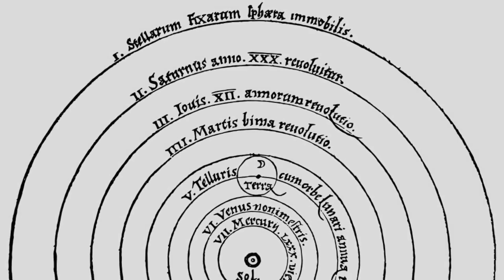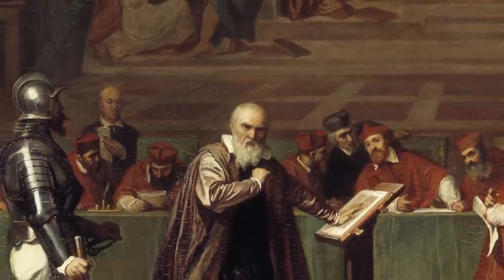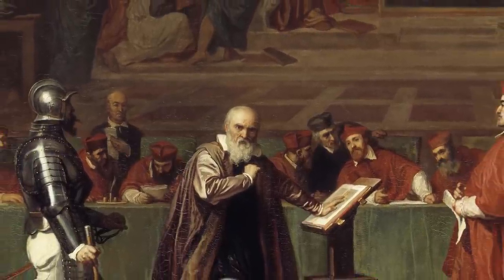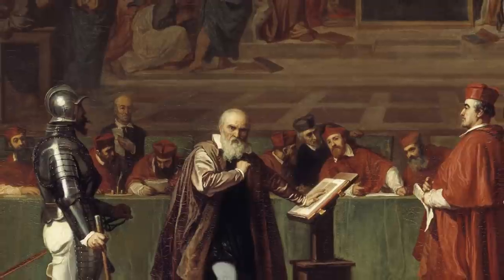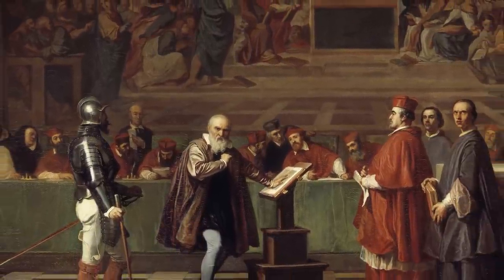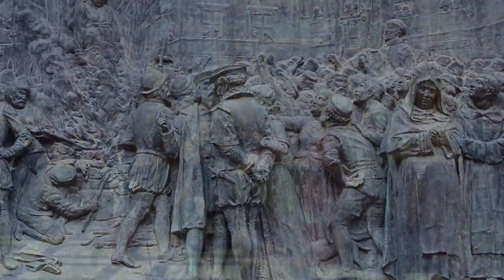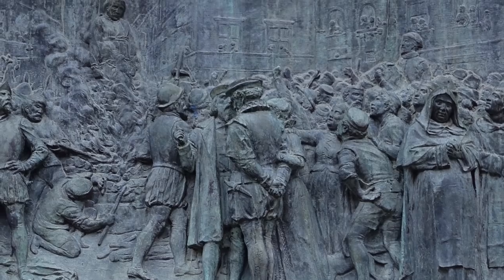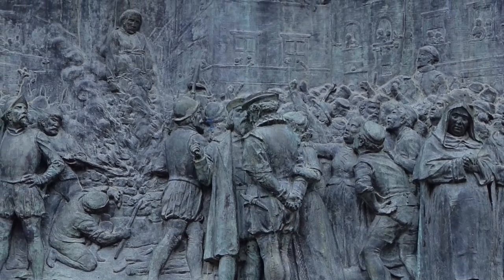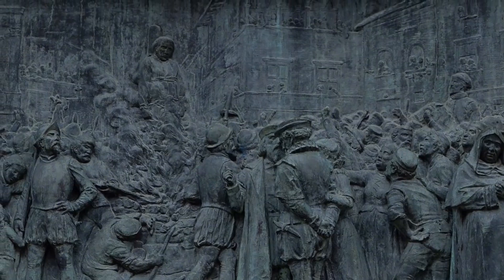But people couldn't handle expanding reality from one world to six. The Church classified the idea as heresy and, in 1616, compelled Galileo to recant under the threat of torture and execution. The threat was not to be taken lightly. The Church had just burned Giordano Bruno at the stake in 1600, partly over his belief that stars are distant suns and that other planets might harbor life of their own.